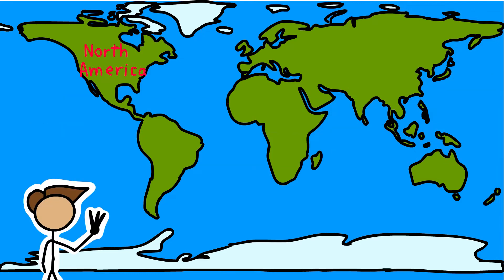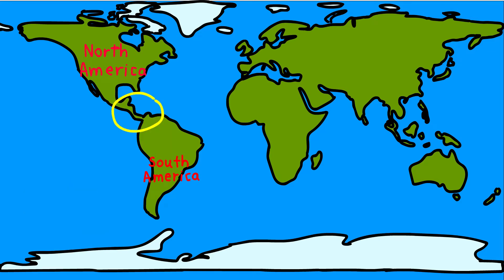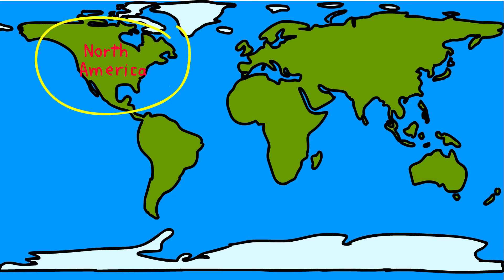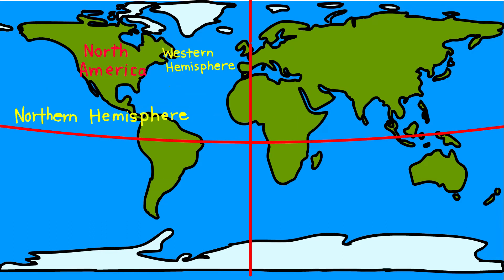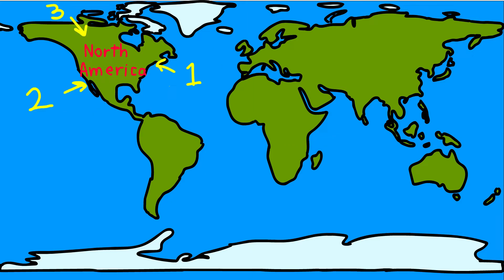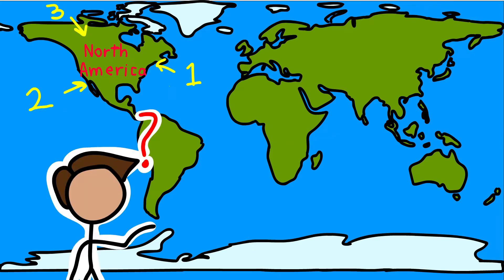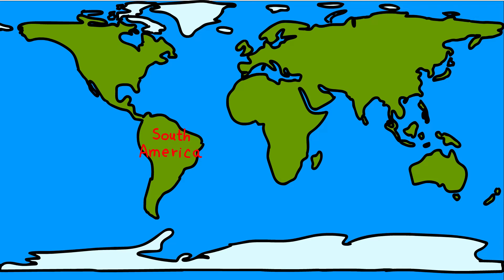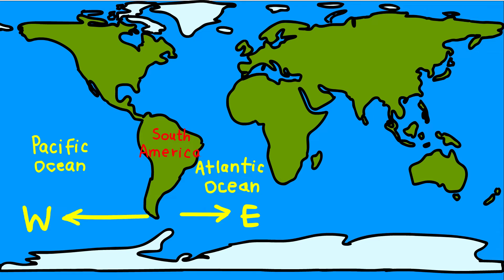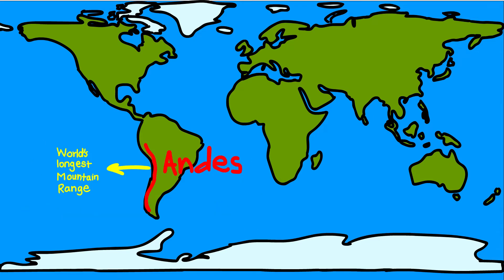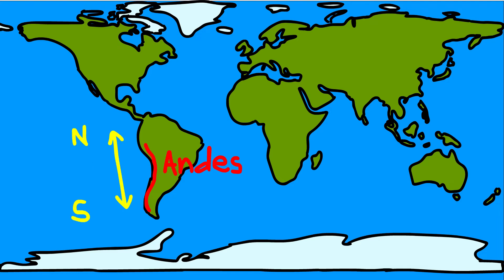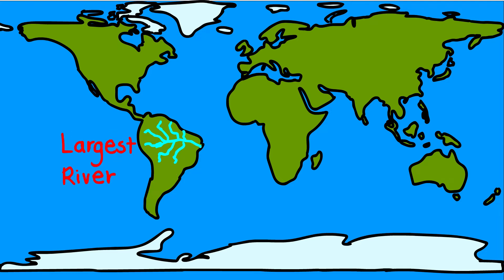North America is the third-largest continent of the world. It is linked to South America by a very narrow strip of land called the Isthmus of Panama. The continent lies completely in the northern and western hemisphere, and three oceans surround it. South America lies mostly in the southern hemisphere. The Andes, the world's longest mountain range, runs through its length from north to south. South America also has the world's largest river, the Amazon.